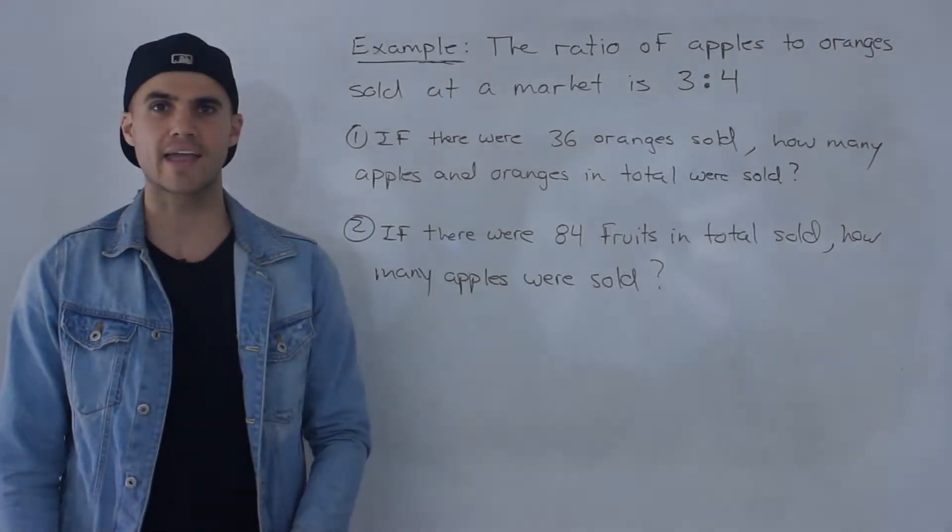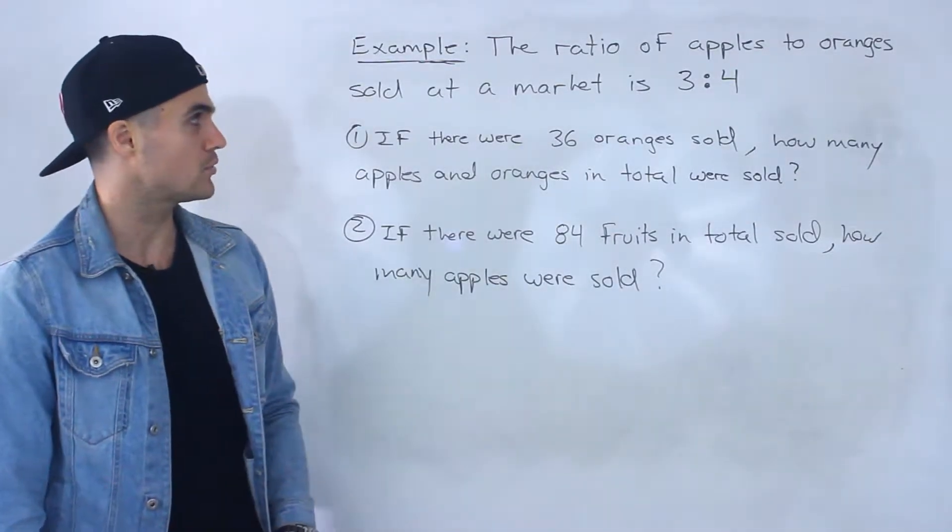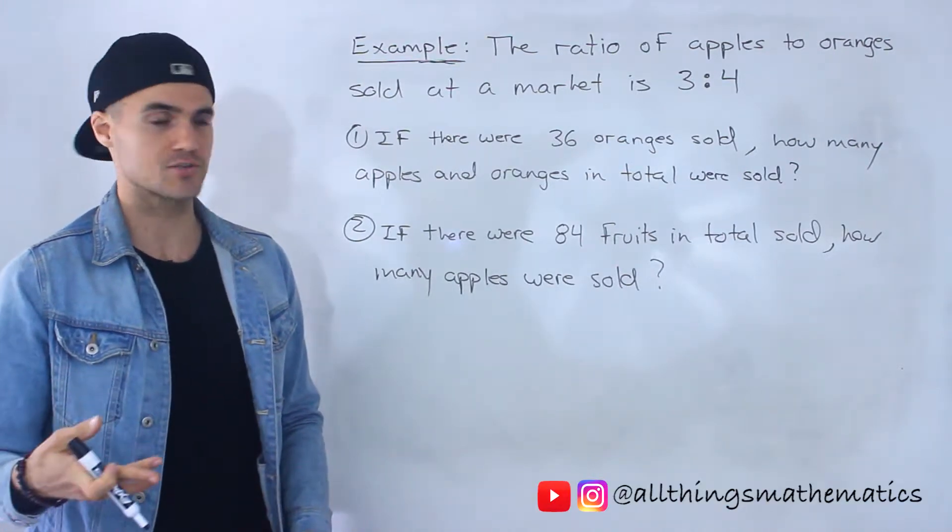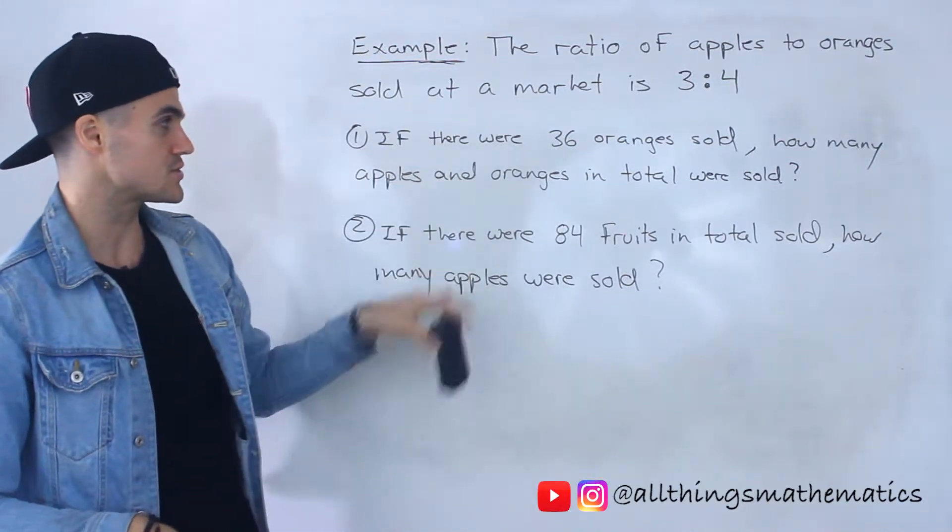Yo, what's up guys? Patrick here. Welcome back and moving on to the next example. We're told the ratio of apples to oranges sold at a market is 3 to 4, and then we got to answer these two questions here.